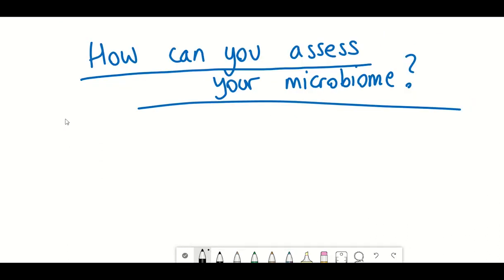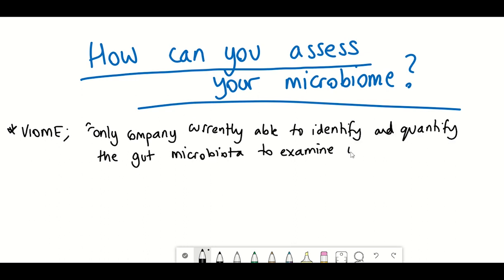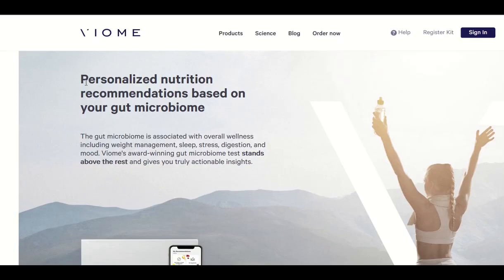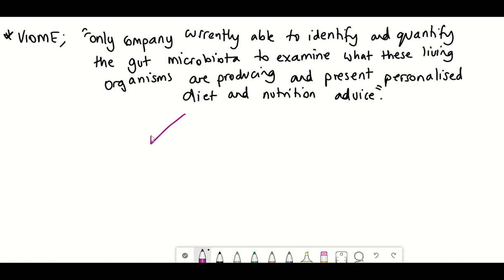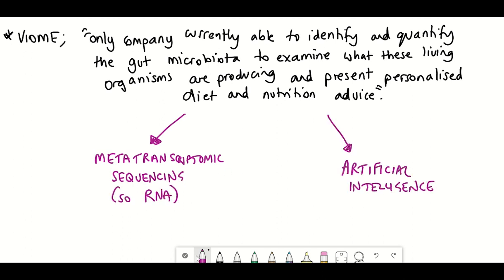So leading on from this, how can you assess your own microbiome? Well, it turns out there are certain companies that are offering to examine your stool sample and give you their analysis of your microbiome. For example, there's one company called Fiome that claims it's the only company currently available to identify and quantify the gut microbiota to examine what these living organisms are producing and present personalized diets and nutrition advice. This is an example of one of the readouts you would get from one of these results. They get these results by looking at the RNA, the transcriptome that's present in the stool sample. And then they use machine learning to kind of come up with that outcome.